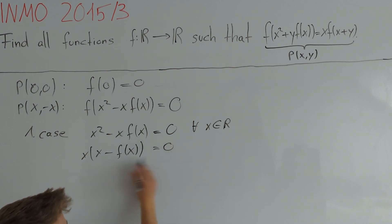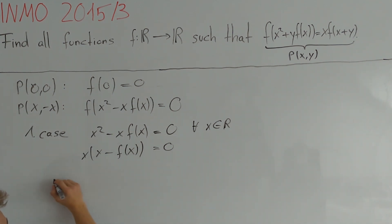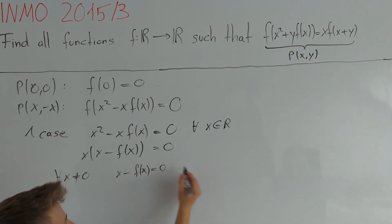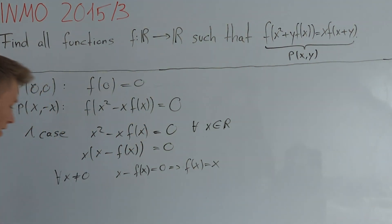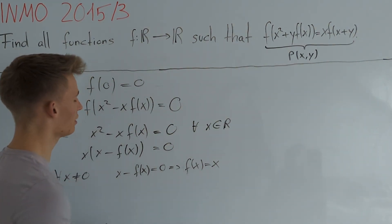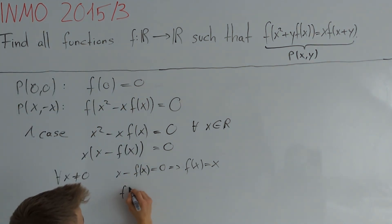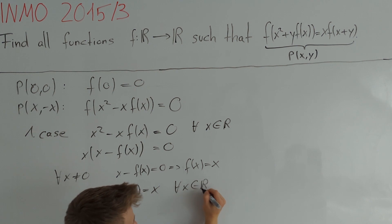This product equals 0, so one of the two terms must be 0. For every x not equal to 0, we get that x - f(x) = 0, which yields f(x) = x. We assumed x ≠ 0, so this holds for all x not equal to 0, but we also know f(0) = 0, so f(x) = x for every x in the real numbers.